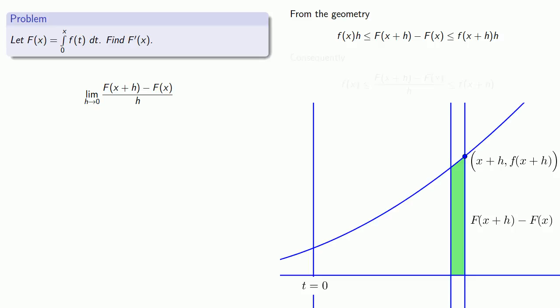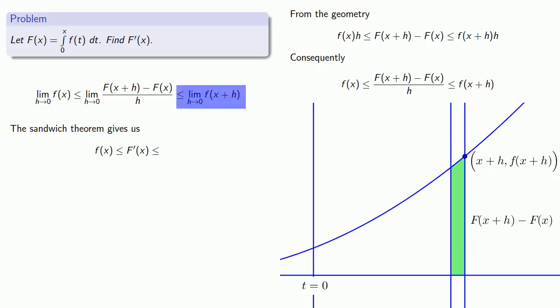Now we can do a little bit of algebra and our difference quotient is bounded between f of x and f of x plus h. Well since we want to take the limit as h goes to 0 and we have trapped our difference quotient in between two functions we can apply the sandwich theorem. So as h goes to 0 the limit of f of x is going to be f of x and the limit of f of x plus h is going to be f of x and so this difference quotient also goes to f of x.